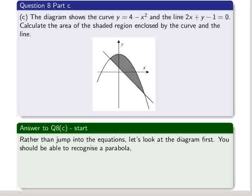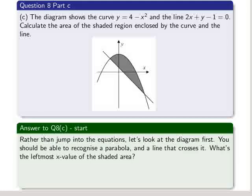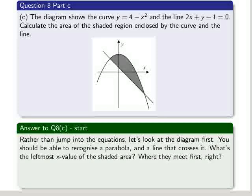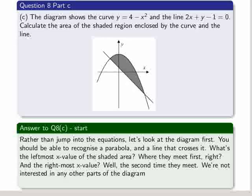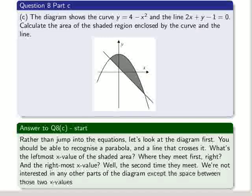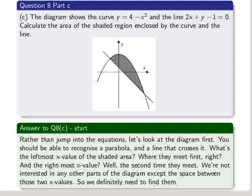We should be able to recognize a parabola and a line that crosses it. What's the leftmost x value of the shaded area? Where they first meet, where the line and the parabola first meet. And the rightmost value, the second time they meet. We're not interested in any other parts of the diagram except the space between those two x values, where they first meet and where they meet for a second time. So we definitely need to find these.